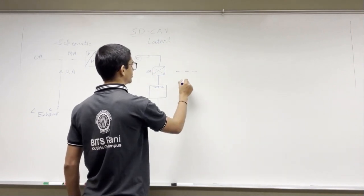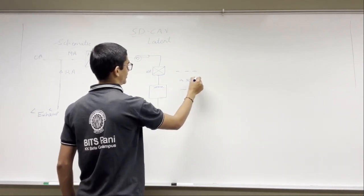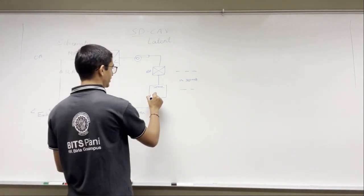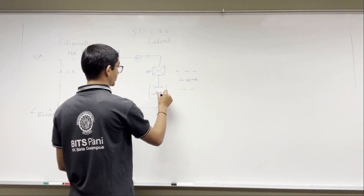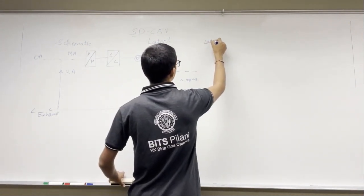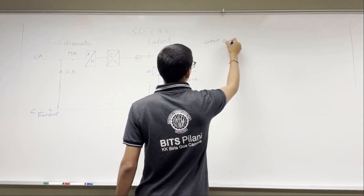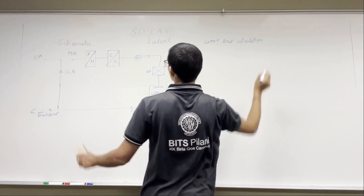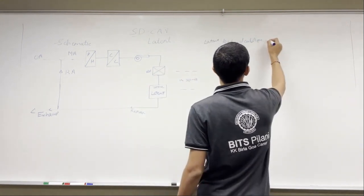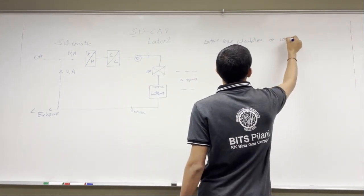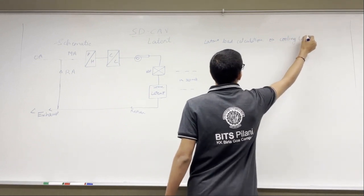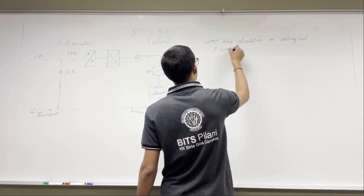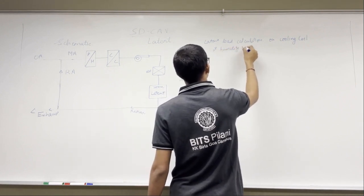Similarly we can have end zones in our case. What we left was the latent calculations or the humidity calculations. We are going to do the latent load calculation and latent load obviously comes only to the cooling coil. So let's do the load calculation on the cooling coil and humidity ratio calculation.